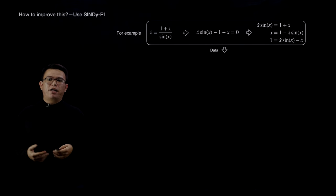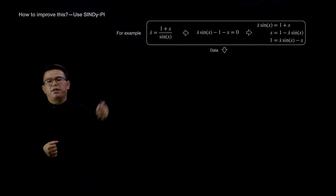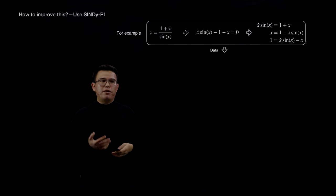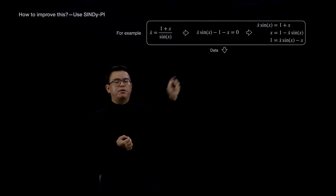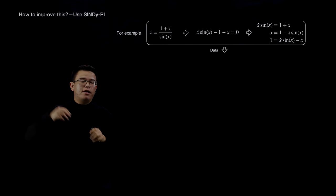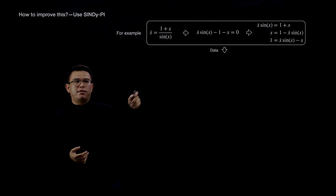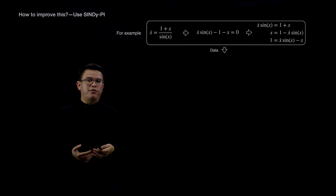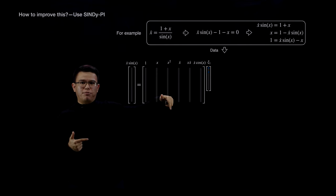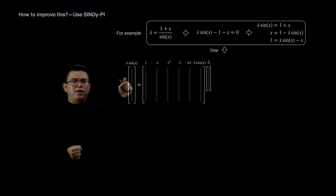Now I'll give a pedagogical example showing the core idea behind CINDY-PI. Suppose we want to identify the rational equation x-dot equals (1 plus x) divided by sin(x). According to implicit CINDY, identifying this rational equation is equivalent to identifying the implicit equation, which has three non-implicit forms—meaning we can place one term on the left-hand side and the remaining terms on the right-hand side so the equation is no longer implicit. If I tell you that x-dot times sin(x) belongs to this implicit equation, you can put it on the left-hand side, build a library on the right-hand side, and perform a sparse regression to figure out the remaining terms.